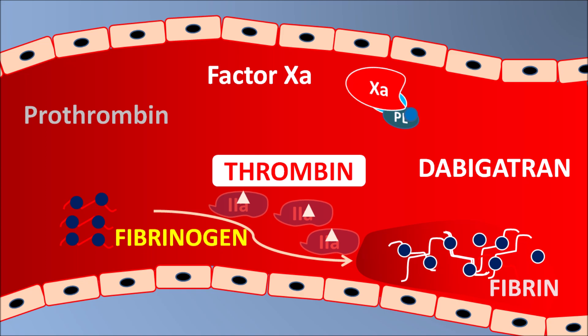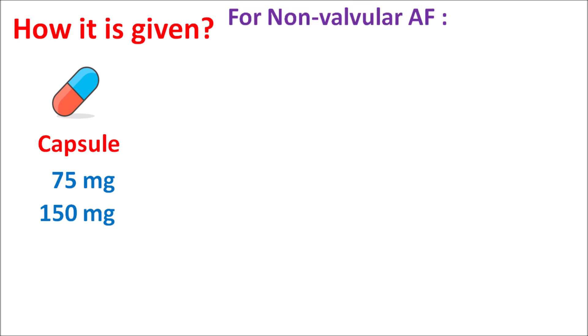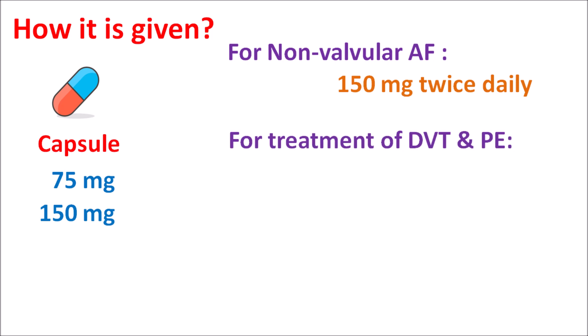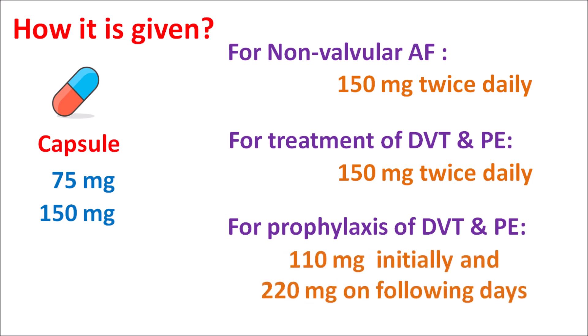Dabigatran is available as capsules at strengths of 75 mg and 150 mg. For treatment of non-valvular atrial fibrillation, the dose is 150 mg twice daily. For treatment of deep vein thrombosis and pulmonary embolism, the dose is also 150 mg twice daily. For prophylaxis of DVT and pulmonary embolism, it can be given as 110 mg on the first day, followed by 220 mg once daily on following days. Dosage adjustments are based on renal impairment as previously discussed.